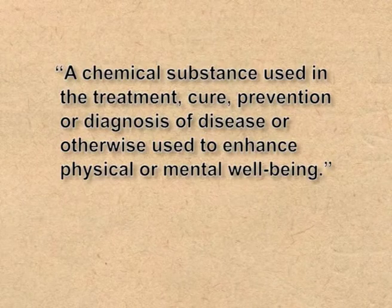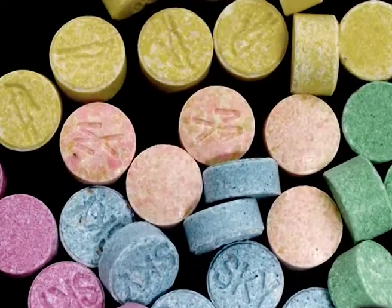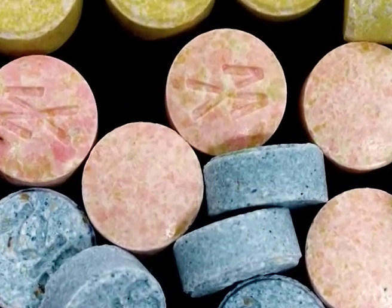Drugs are defined differently by various drug control laws and government regulations as medicine or on the basis of their usage. In pharmacology, a drug is defined as a chemical substance used in the treatment, cure, prevention or diagnosis of disease, or otherwise used to enhance physical or mental well-being. For chronic disorders, drugs can be prescribed for a limited duration or on a regular basis. Drugs, hallucinogens and opioids are examples of recreational drugs which affect the central nervous system.